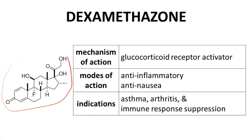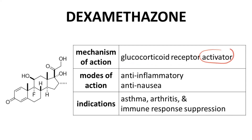Dexamethasone is shown to the left. Dexamethasone's target is the glucocorticoid receptor, and it activates the receptor. The glucocorticoid receptor plays roles in many response pathways in a cell, so dexamethasone shows multiple modes of action. Dexamethasone is an anti-inflammatory and reduces nausea, making it an antiemetic.